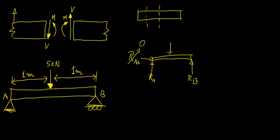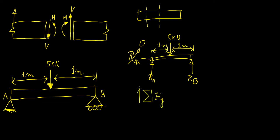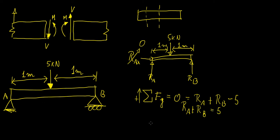We have an external force of 5 kilonewtons acting right at the middle of the beam, with one meter between support A and the load, and another meter from the load to support B. Now we're going to find the reaction forces. Taking the sum of forces in the y-direction: Ra + Rb − 5 = 0, so Ra + Rb = 5.